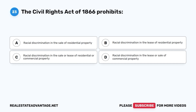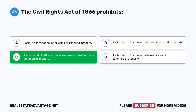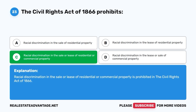Question 23. The Civil Rights Act of 1866 prohibits: A. Racial discrimination in the sale of residential property. B. Racial discrimination in the lease of residential property. C. Racial discrimination in the sale or lease of residential or commercial property. D. Racial discrimination in the lease or sale of commercial property. The correct answer is C. Racial discrimination in the sale or lease of residential or commercial property is prohibited under the Civil Rights Act of 1866.